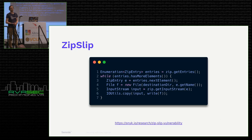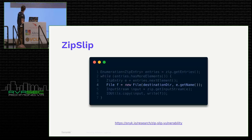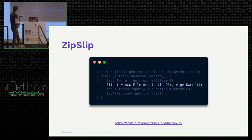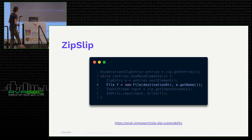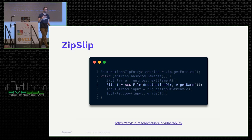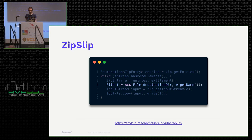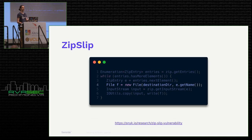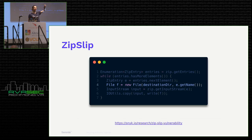Here is some example Java code that's vulnerable to Zip Slip. The problematic line is where you're joining the destination path to the path of a particular entry. As there's no sanitization — you're not checking the contents of the path at all — this could potentially write anywhere.